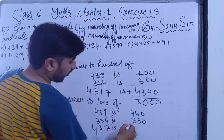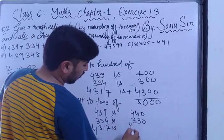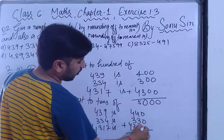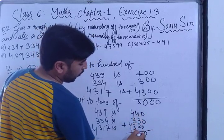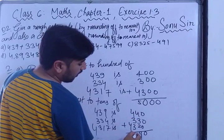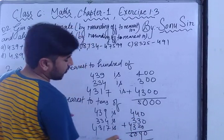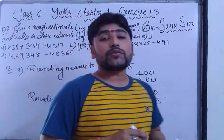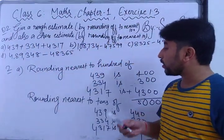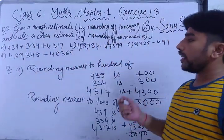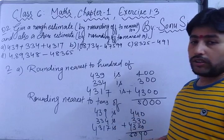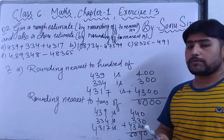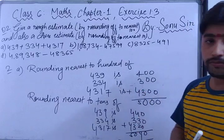Adding 440 + 330 + 4320, the sum is 5090. So we have to find rounding nearest to 100 and rounding nearest to 10 for each question. Write this answer in your notebook.